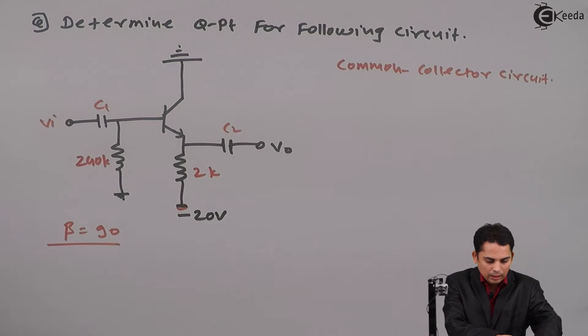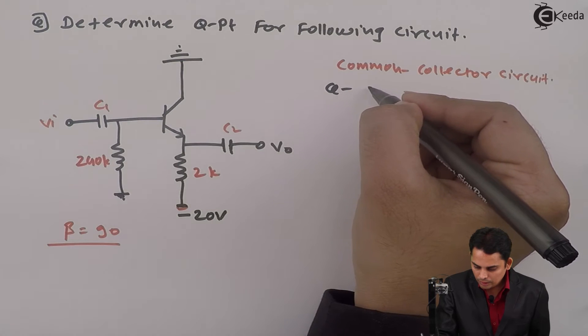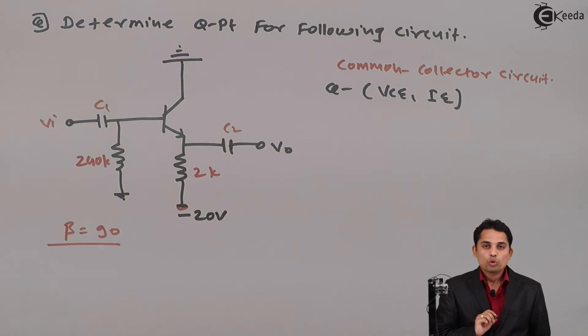And in common collector, the Q-points will be VCE and IE. So we need to define or find out VCE and IE.